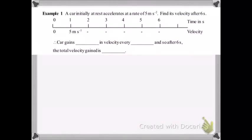Now here's an example that just maps out a change in velocity. A car is initially at rest, which means it's not moving to start with, and it accelerates at a rate of 5 m per second squared. Find its velocity after 6 seconds. What this means is that the car is gaining 5 m per second in velocity every second. And so after 6 seconds, it's just 5 times 6 equals 30 m per second.